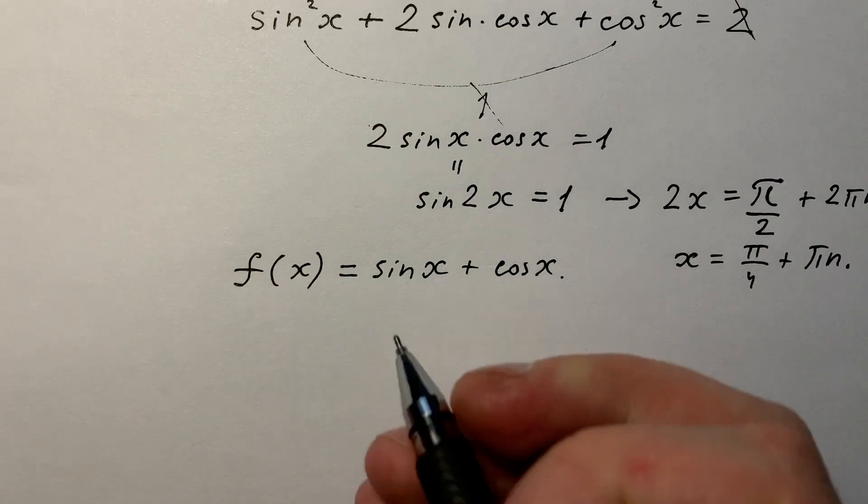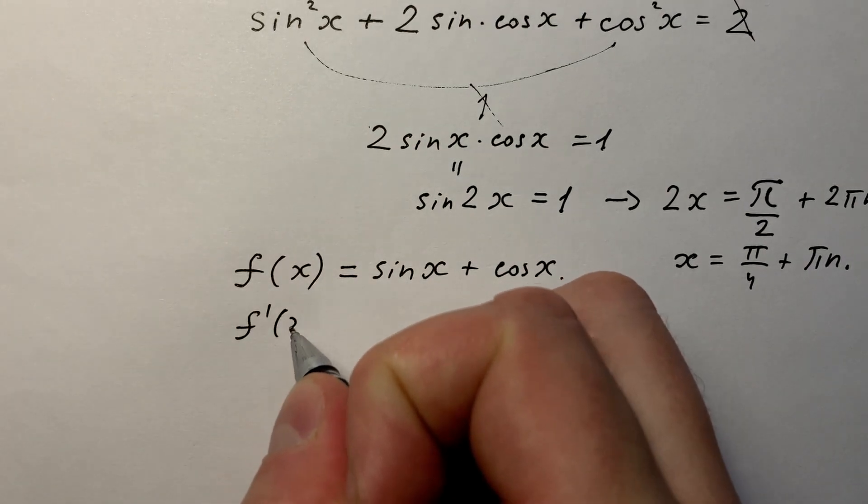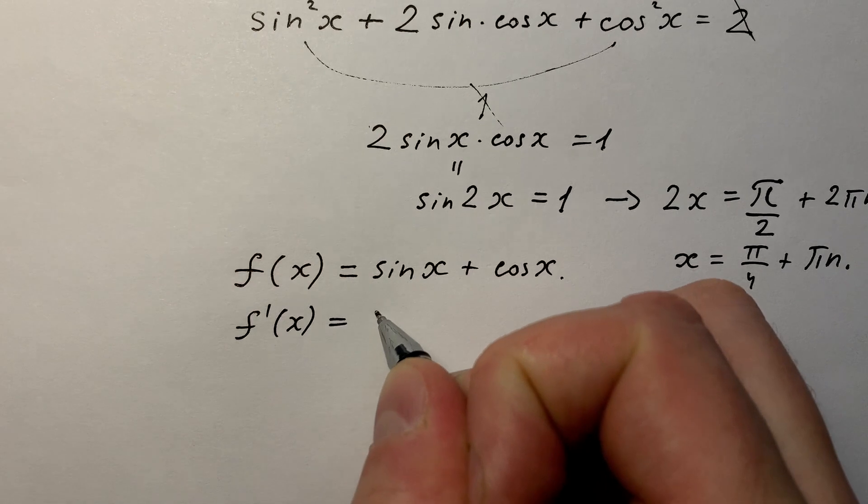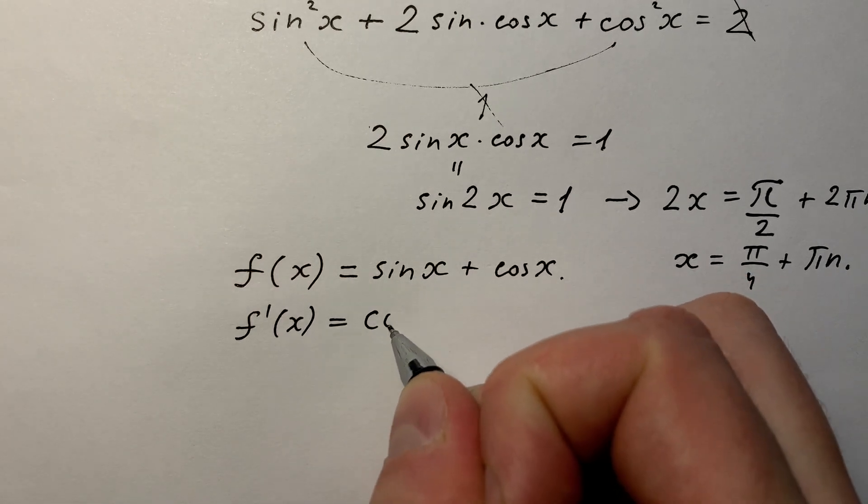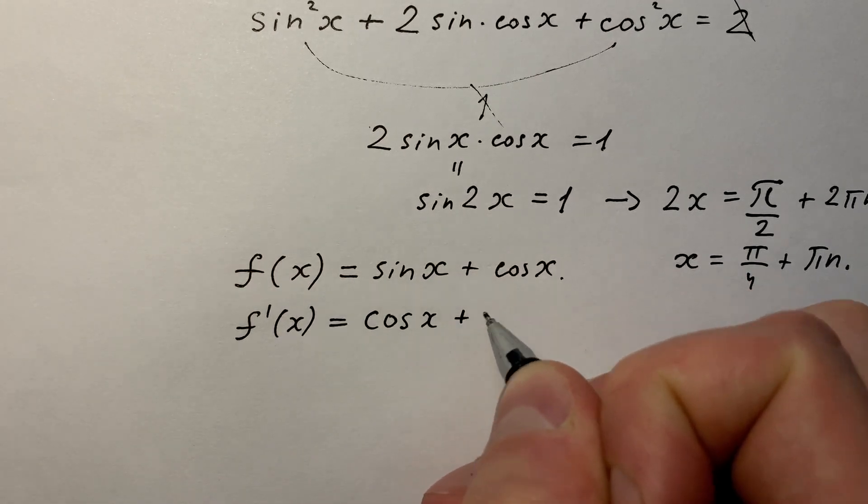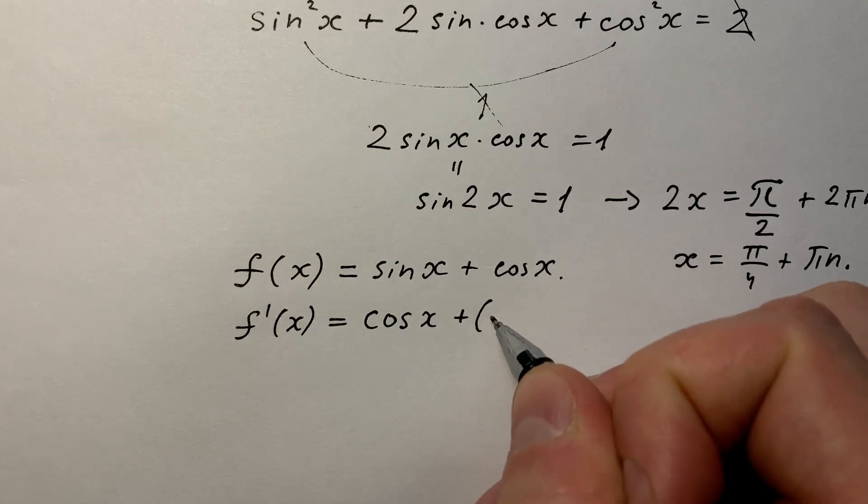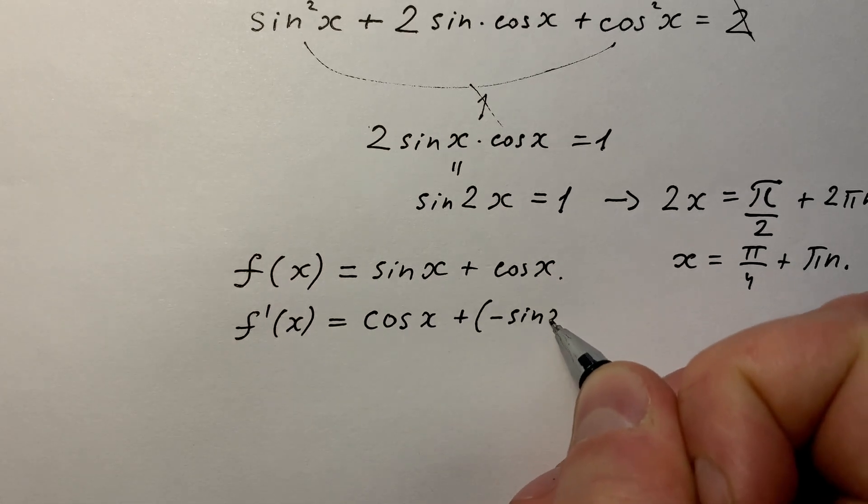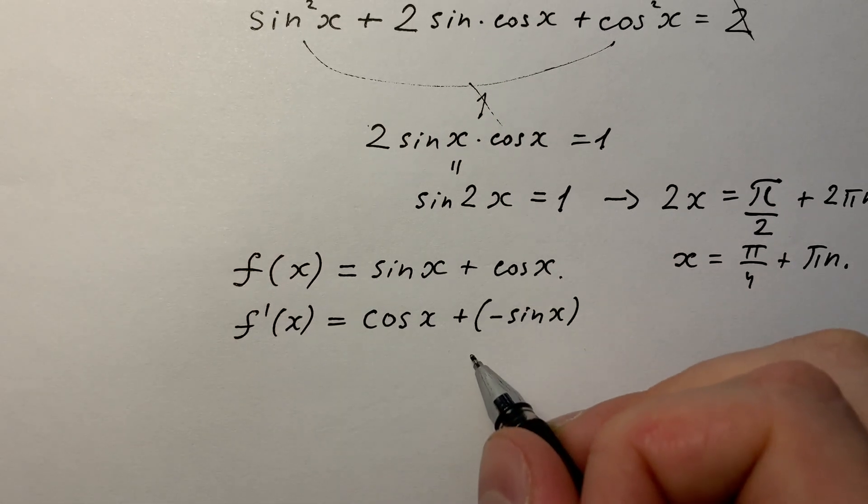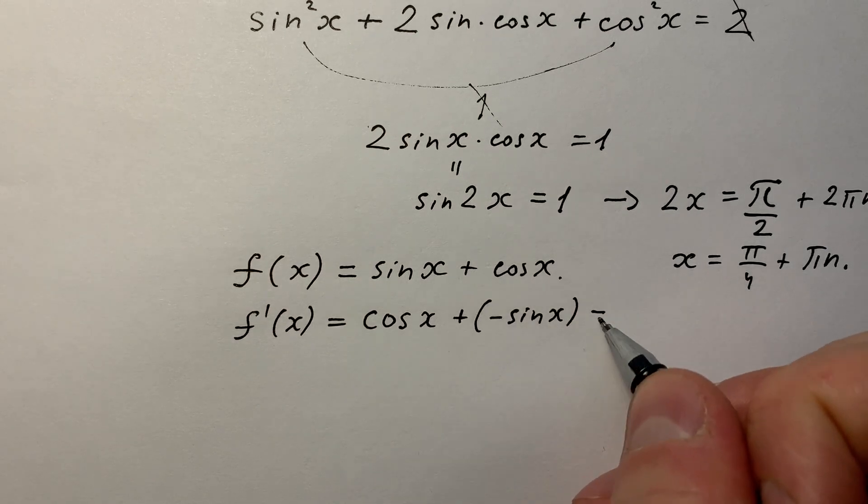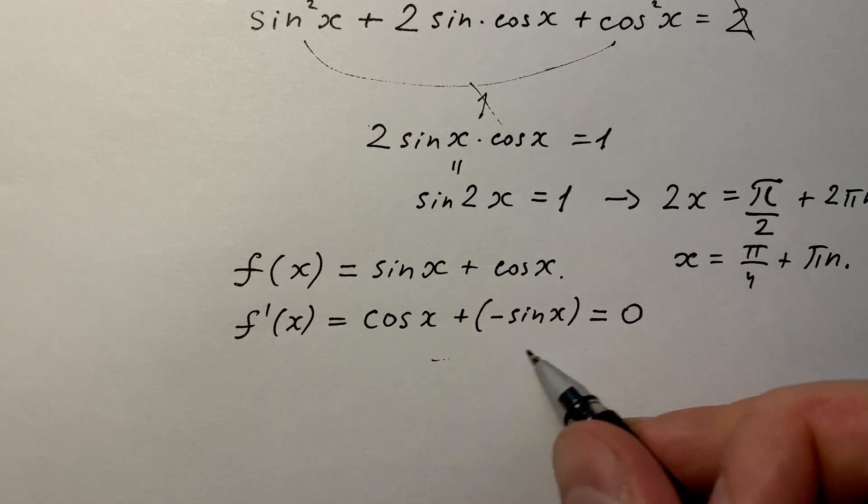The derivative of this function equals: derivative of sine equals cos(x), plus derivative of cosine equals minus sin(x). To find a point of maximum or minimum, it equals zero.